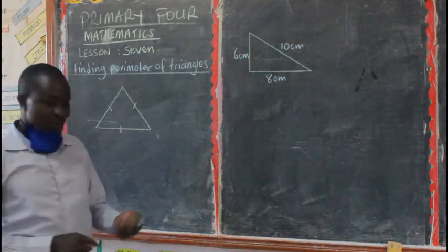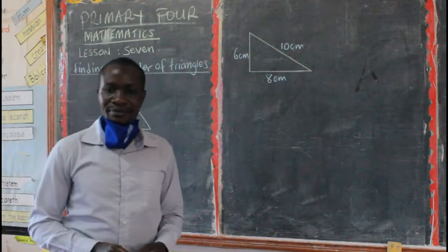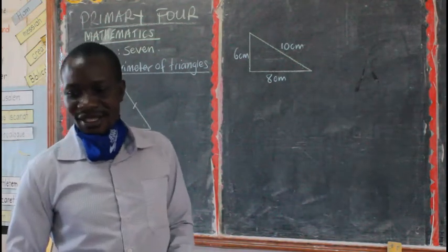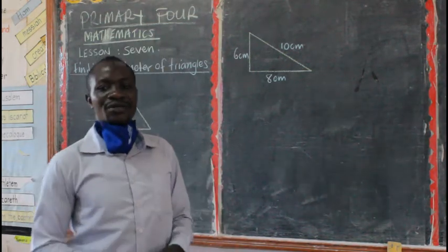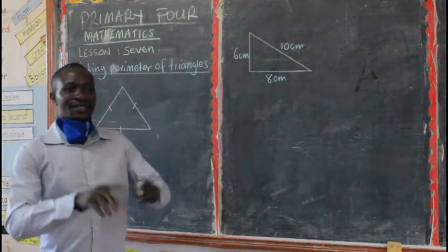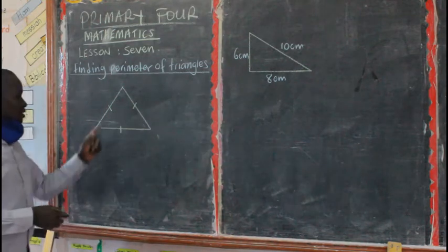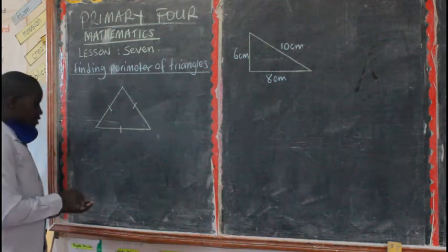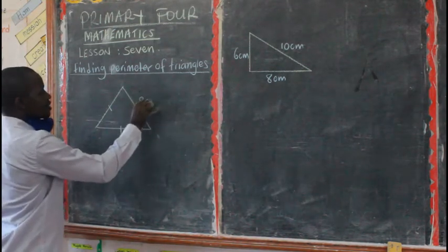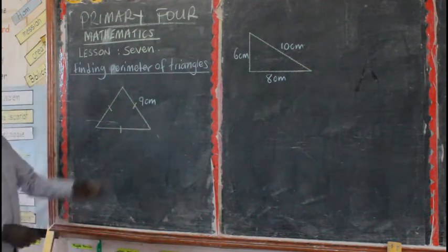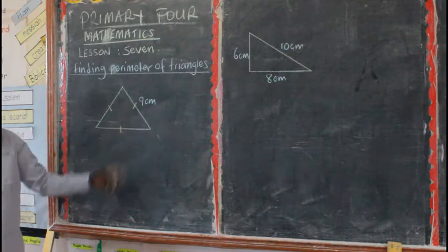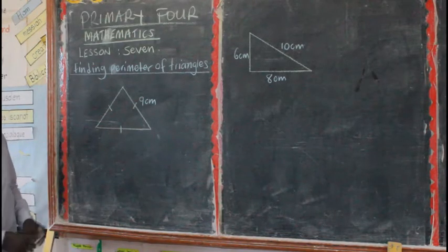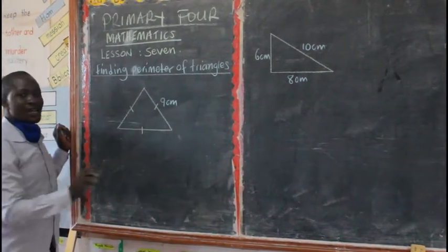You can understand that the triangle has three sides. So to find the perimeter of the triangle which is having three sides, we are going to add the three sides. So for example this triangle here, this triangle is having 9 cm as it. And we have these symbols here. These symbols, once you see them, they mean that all sides are equal.